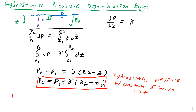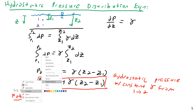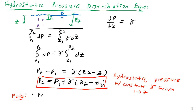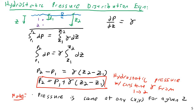Key takeaways: pressure is the same at any (x, y) for a given depth z; and pressure varies linearly with depth if γ is constant.